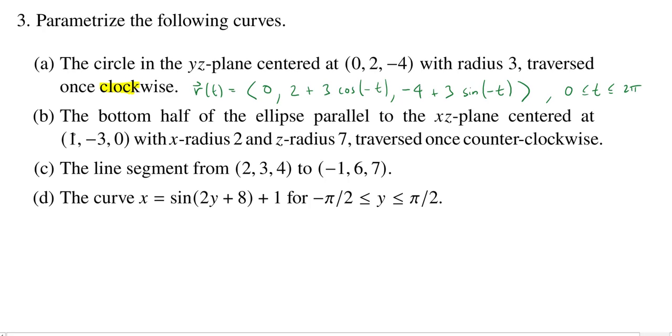So the second one is going to be like the first one. The first one was a circle. This one is an ellipse. Only key here is it's actually only the bottom half of the ellipse. So maybe we'll try to draw a picture of this. Now it's going to be in the XZ plane, or actually not quite in the XZ plane, but parallel to the XZ plane.